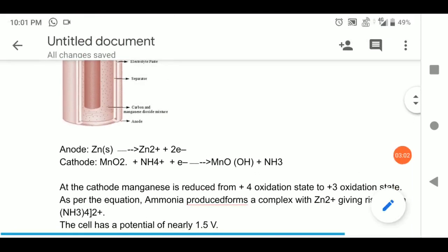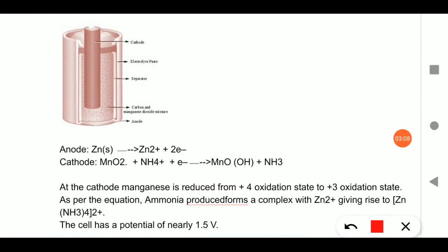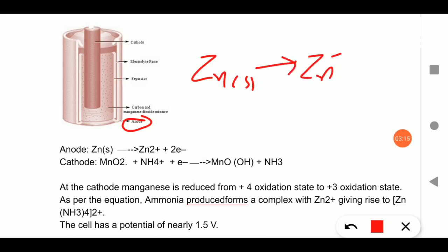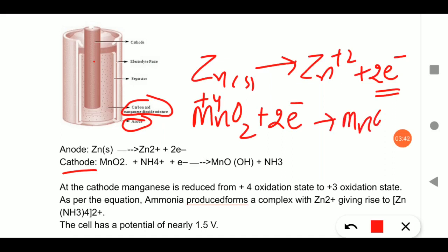At the anode, zinc metal loses two electrons. These two electrons travel to the cathode, where the graphite rod is located. At the cathode, MnO2 (with carbon paste) gains these two electrons. MnO2 has manganese in the +4 oxidation state, and it is reduced — gaining two electrons — along with NH4Cl and NH3 and H2O.